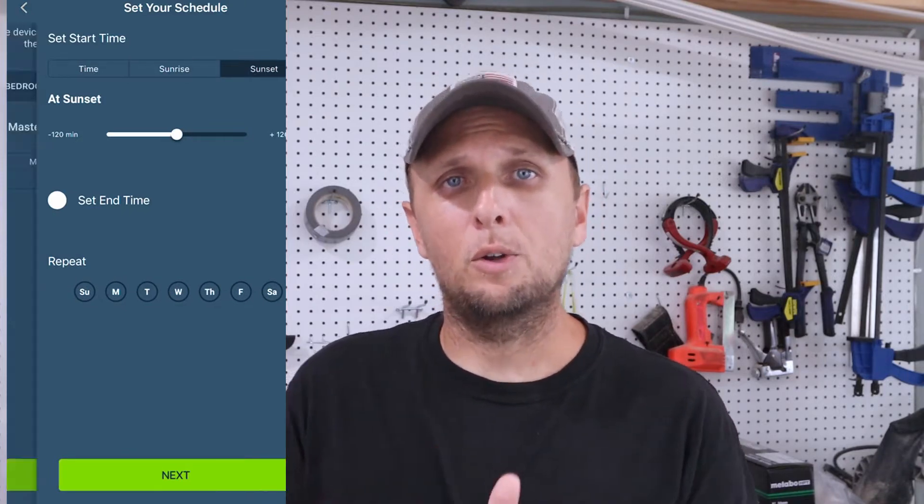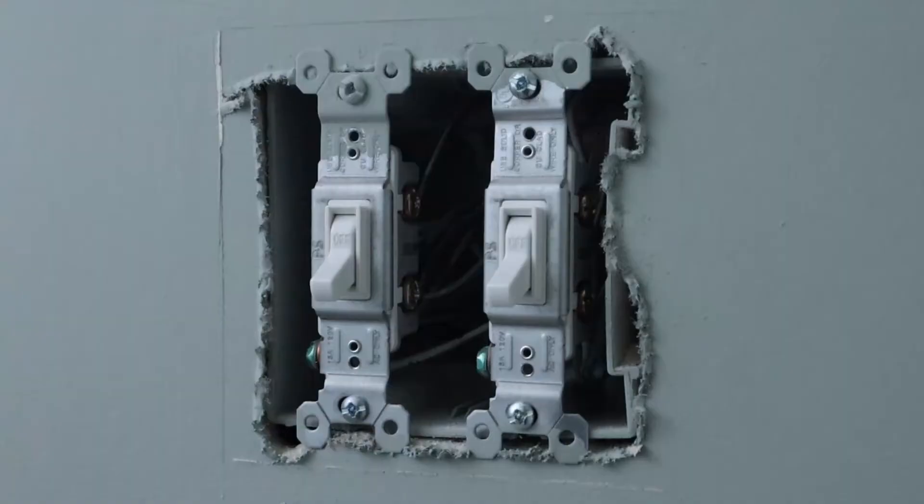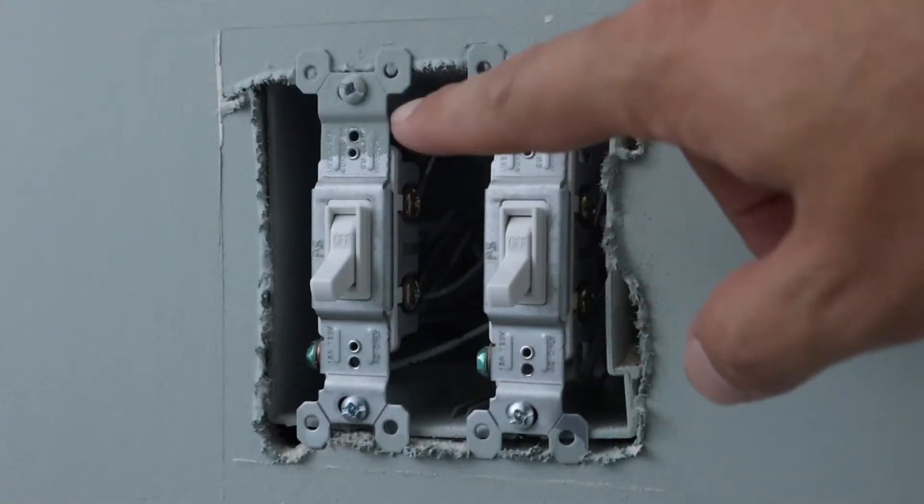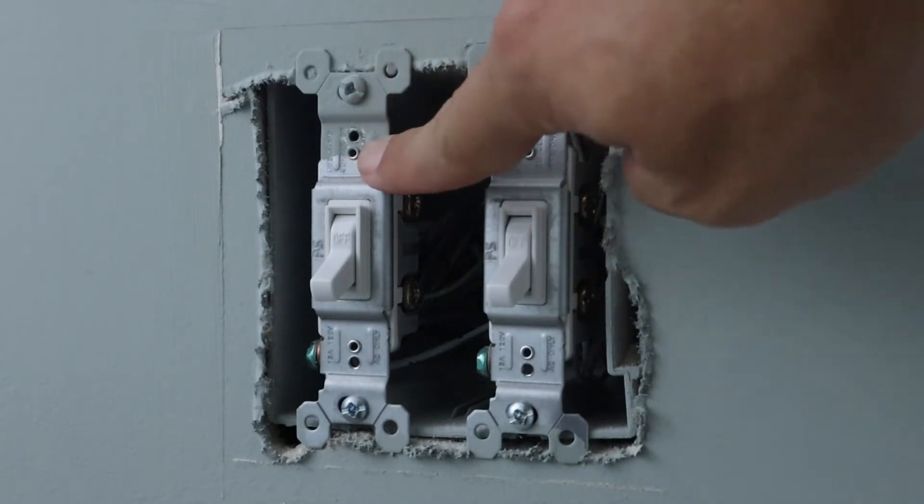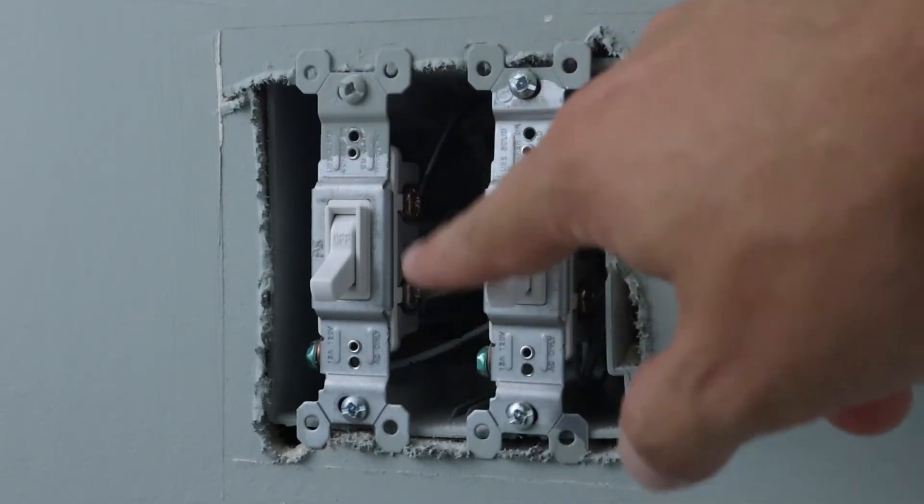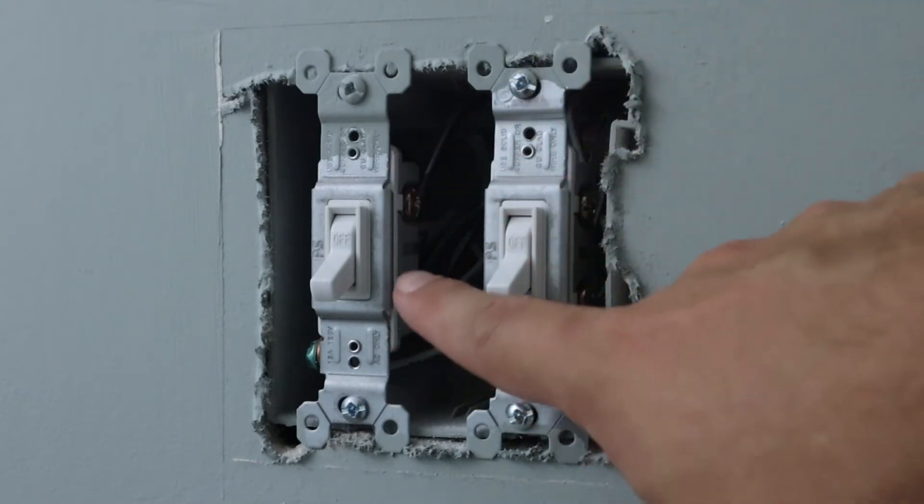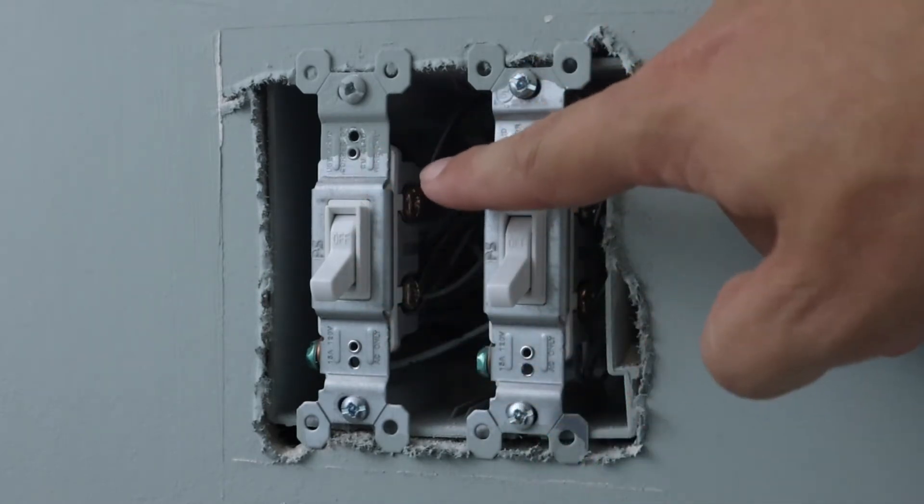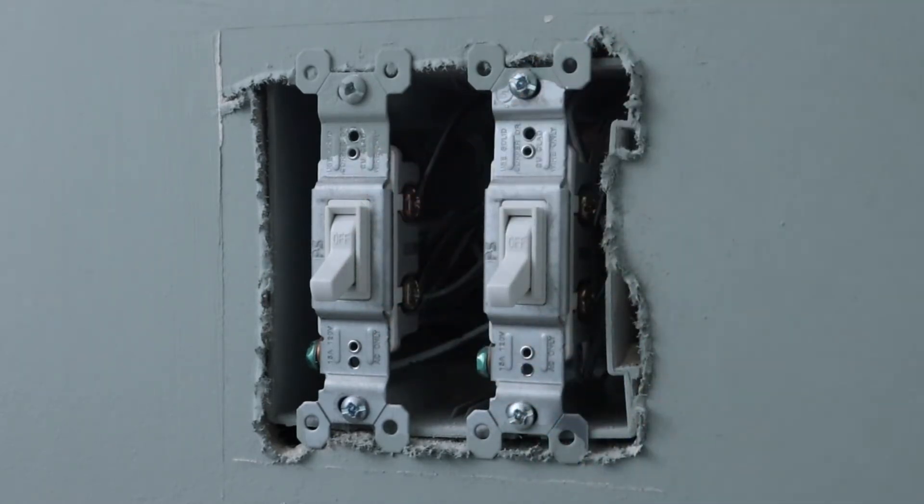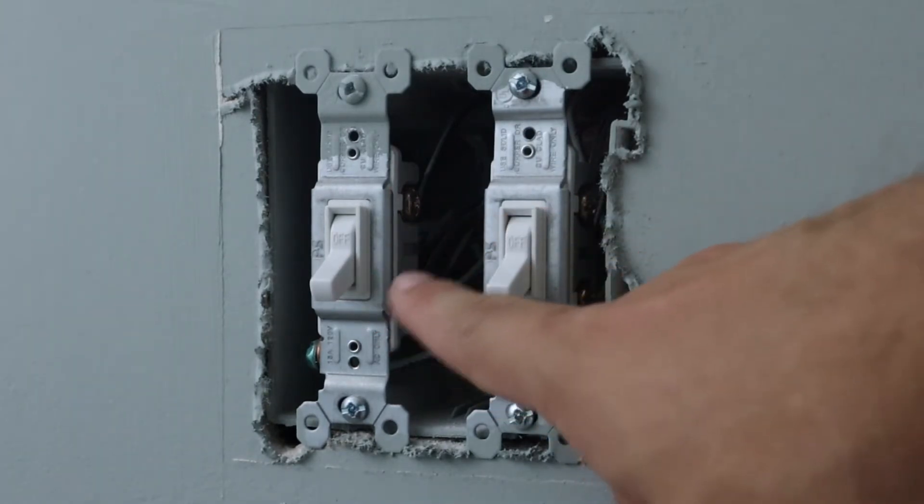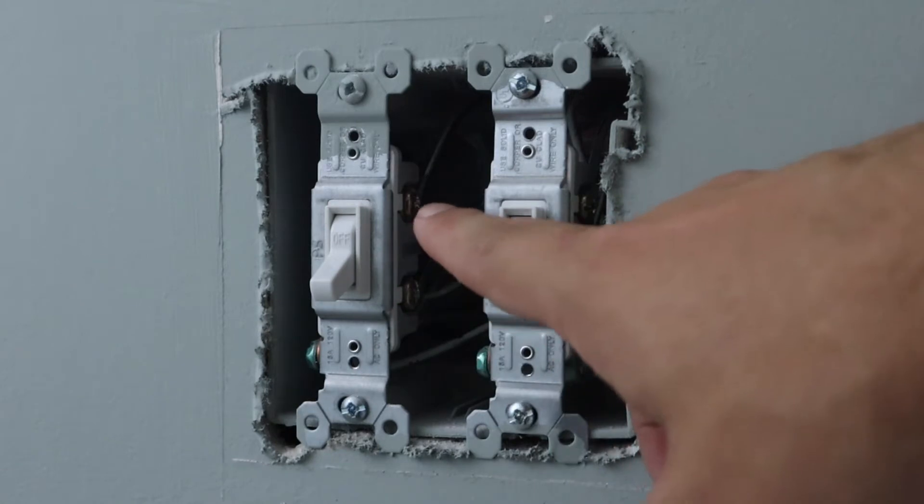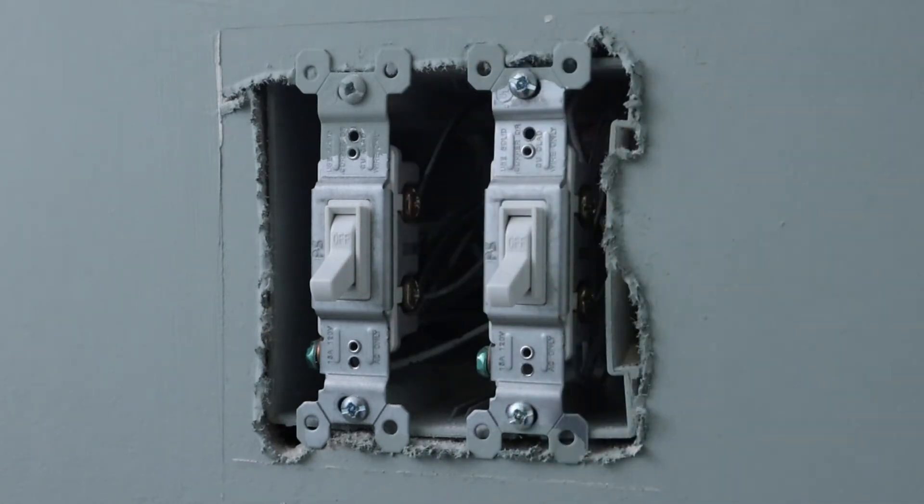All right, so now we've got our switch plate off here. Before we turn the power off going to these switches, which this is going to be the one we're replacing for the fan, we need to find out which one of these wires is the line wire and which one is the load wire. It's going to matter because on the new switch each one has to go in a specific place. Using a multimeter, we're going to be looking for which one of these wires is the line wire, which is the one bringing the electricity into this switch.